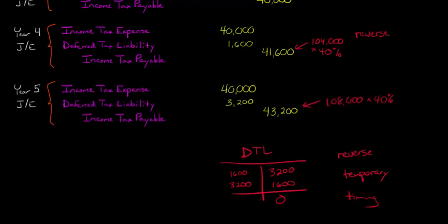If you look at a firm's balance sheet, you'll very infrequently see a deferred tax liability of zero, because firms have many different types of deferred tax liabilities. Even though one piece of property eventually reverses to zero, the firm is continuously buying new property, creating new deferred tax liabilities. In the next video, we'll be talking about a deferred tax asset.